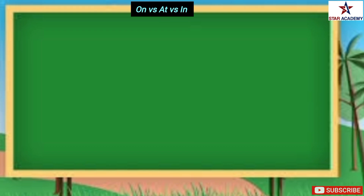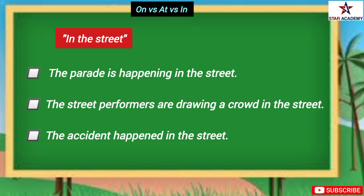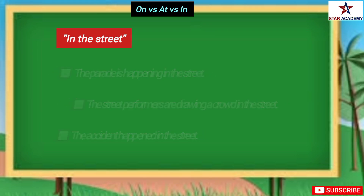Here are some examples that will further improve your understanding. For 'in the street': 'The parade is happening in the street' means the parade is taking place within the street. 'The street performers are drawing a crowd in the street' means the performers are performing within the street. 'The accident happened in the street' means the accident occurred within the street.